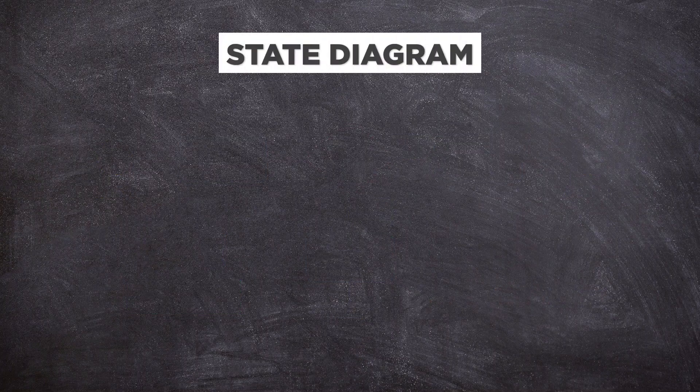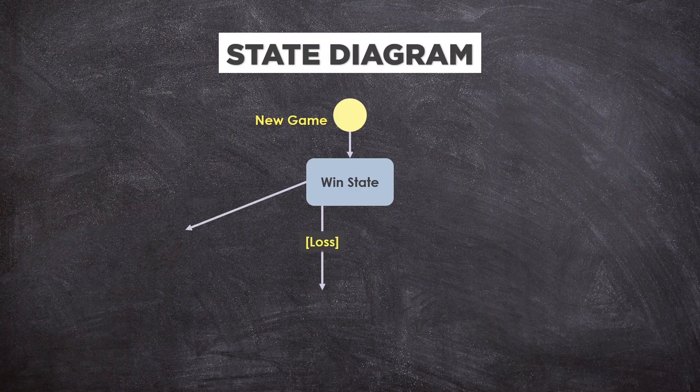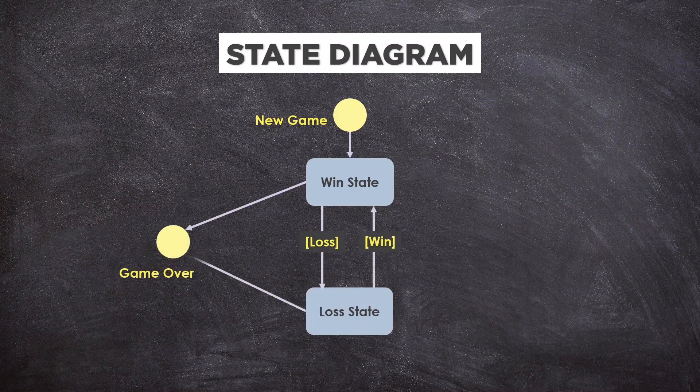State diagrams are similar to activity diagrams, although the notations and usage change a bit. They are sometimes known as state chart diagrams as well. These are very useful to describe the behavior of objects that act differently according to the state they are in at the moment.